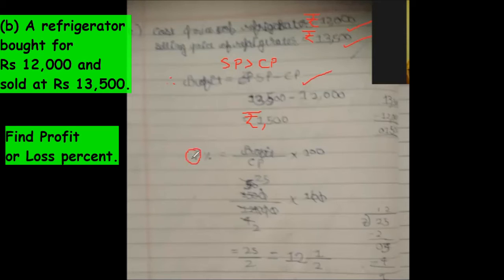Okay, profit percentage. Profit upon CP into 100. 1500 upon 12,000 into 100. So I'm doing it here so that I can just check it. Three zeros, one, two, and three. Okay, three. 50, 5, and 4, 4. 25, 2.